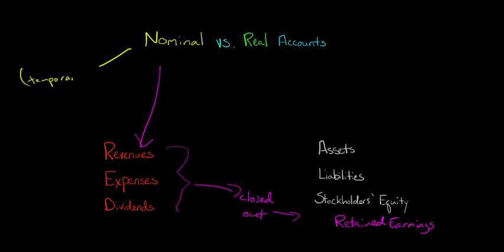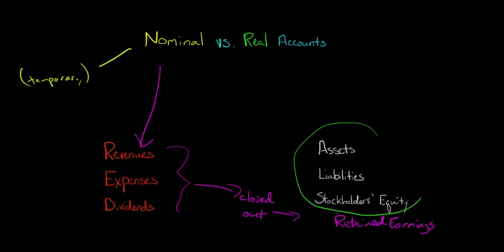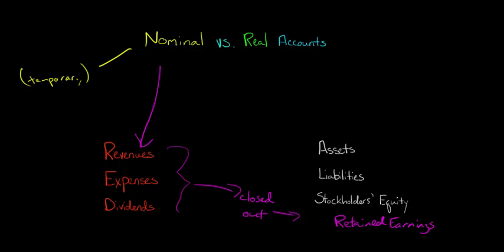Whereas real accounts — all these balance sheet accounts: assets, liabilities, and equity — these are all real accounts. So like cash, for example; that's a type of asset, so cash is a real account. The real accounts are also known as permanent accounts.